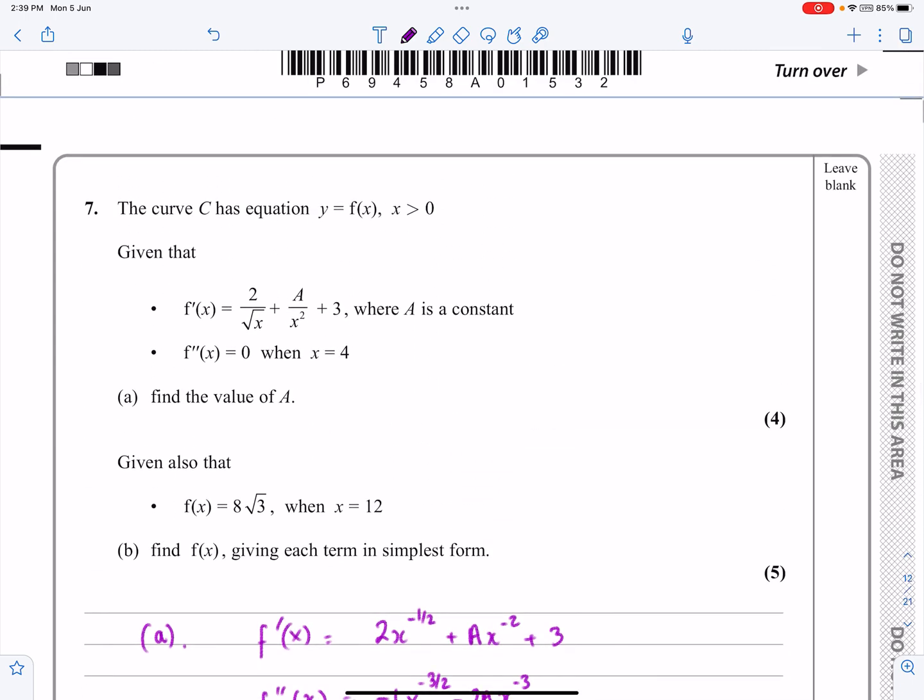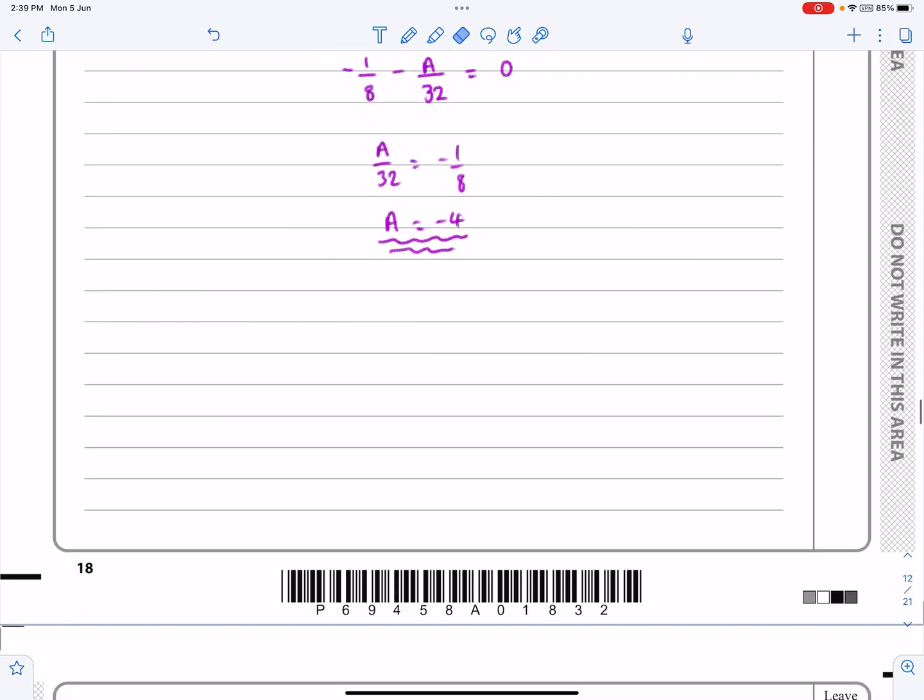For the second part, it says given that f(x) is 8√3 when x equals 12. Well look, we're going the other way here. If we've got f'(x), we differentiated to get f''(x), but now we're actually going to be integrating to get f(x). So I told you at the start of the question that it was both differentiation and integration in this. So let's make a start on that part then.